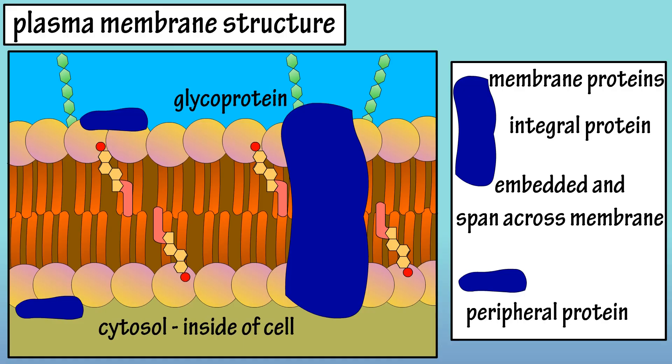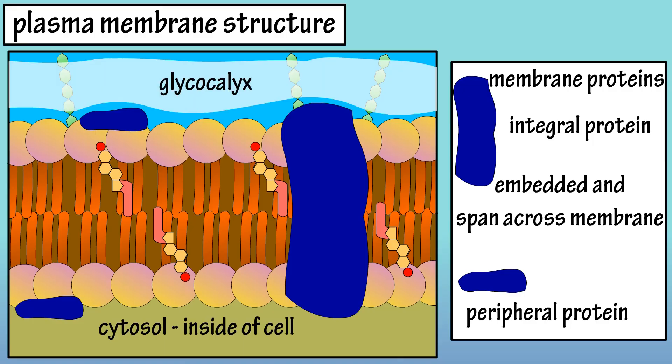The carbohydrate portions of the glycoproteins and glycolipids help to form what is called the glycocalyx, which is a sugar-like coating on the outside of a cell's surface. Peripheral proteins are attached to the internal or external surface of the membrane and many times they are attached to an integral protein.